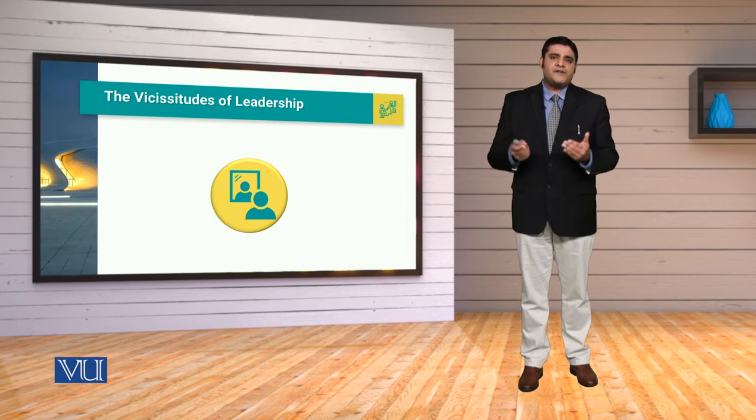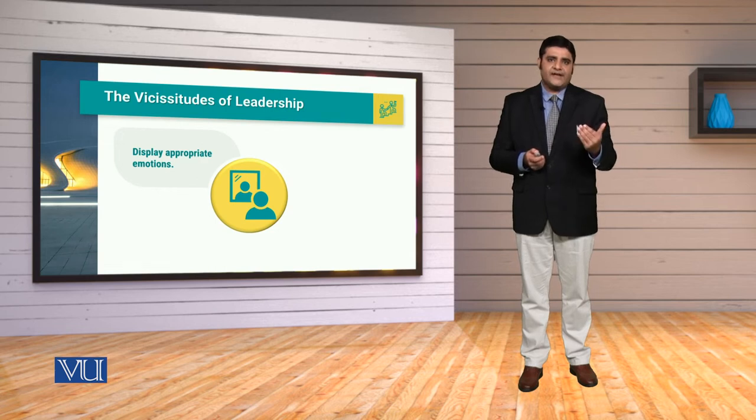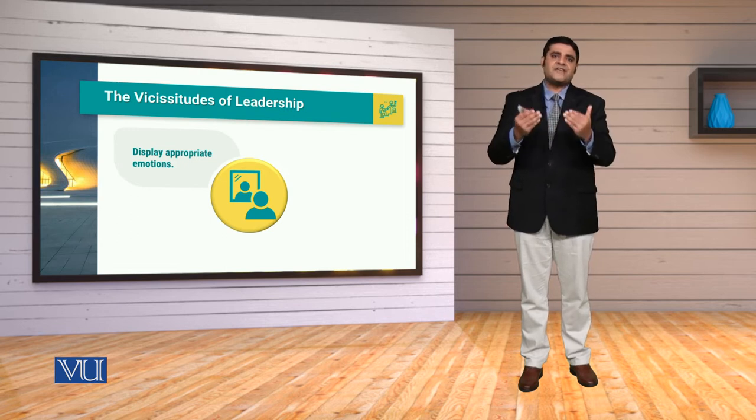When we talk about the vicissitudes of leadership, we have to display appropriate emotions, because ups and downs are not just part of a leader's life — they are also part of a follower's life. We need not to see followers only in an idealized perspective. Because in the leadership context, followers can be willing and able, not willing and able, or willing but not able, so in different contexts our followers' perspective counts.